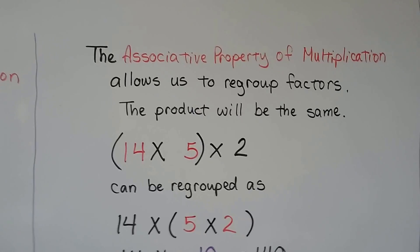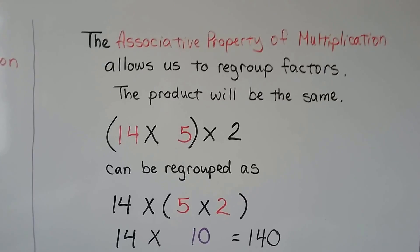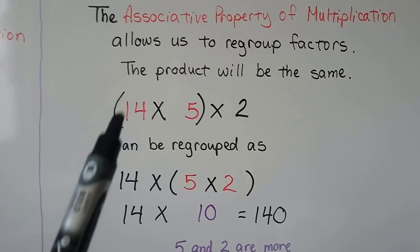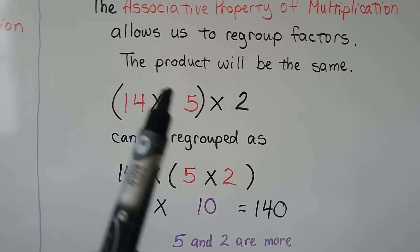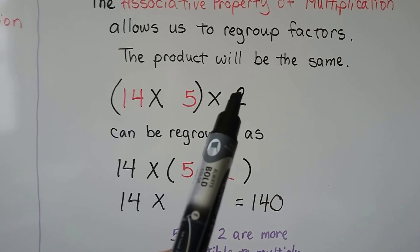The associative property of multiplication allows us to regroup factors, and the product will be the same. If we have 14 times 5 in parentheses, so we should do this first and then multiply it by 2,